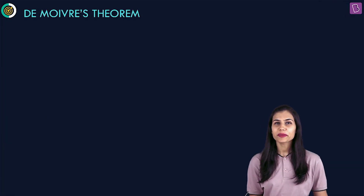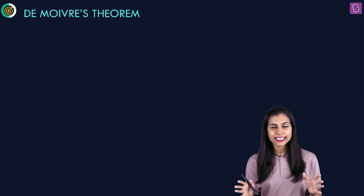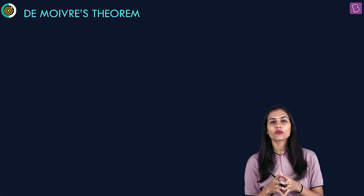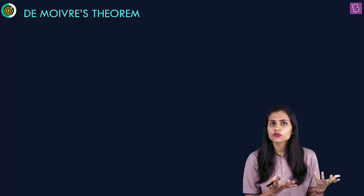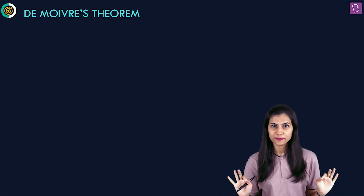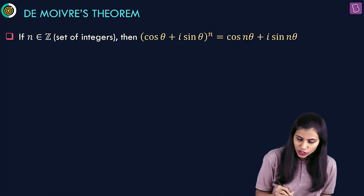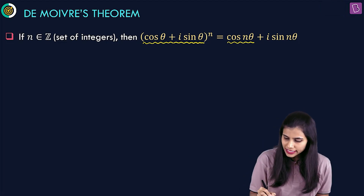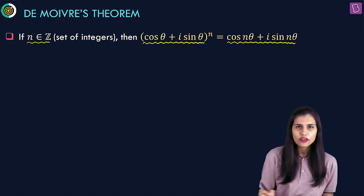The very first topic we have to develop a firm grip on is De Moivre's theorem. I can't stress upon the importance of this theorem enough. It is this very theorem that we are going to extensively use in understanding some very crucial concepts coming up next, like the cube roots of unity and nth roots of unity. You have no choice but to master this theorem. The first statement says that (cos θ + i sin θ)^n = cos(nθ) + i sin(nθ), provided n comes from the set of integers.